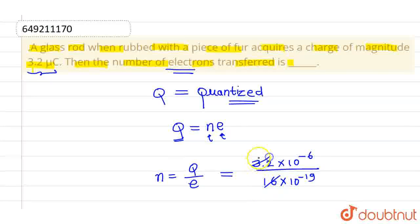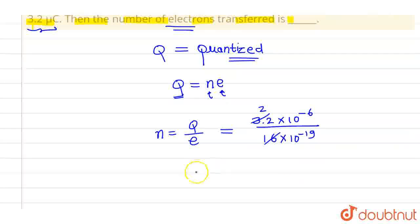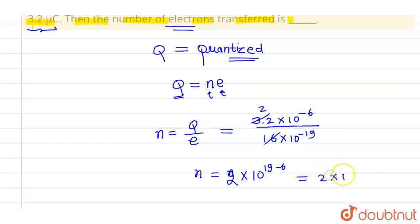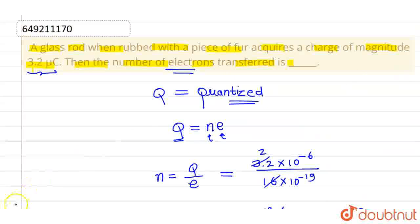So calculating this, 3.2 divided by 1.6 gives us 2. The number of electrons is 2 times 10 to the power 13 electrons. This is the number of electrons transferred. I hope you understood. Thank you.